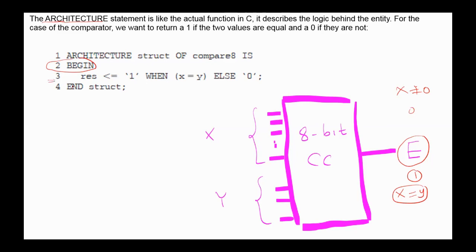Statement 3 is the main statement of this section. The value 1 will be placed in the result when the numbers X and Y are equal, else it will retain 0. The final line 4 tells us that we have completed our description of the ARCHITECTURE struct.